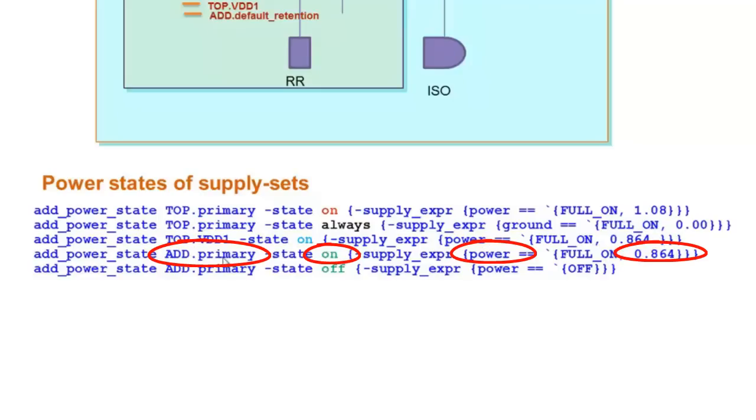Add.Primary Power has a state named On operating at 0.864V. It also has a state named Off which indicates it is switched off.